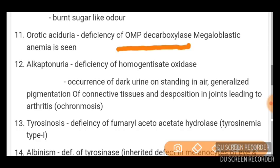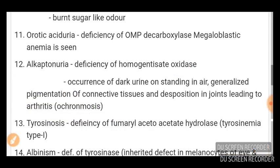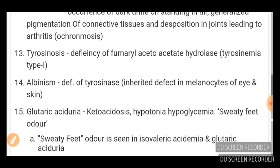Alkaptonuria involves deficiency of homogentisate oxidase, with dark urine on standing in air and generalized pigmentation of connective tissue. Deposition in joints leads to arthritis, called ochronosis — found in alkaptonuria. Tyrosinosis is due to deficiency of fumarylacetoacetate hydroxylase.